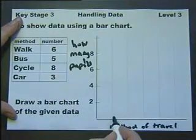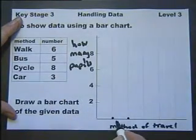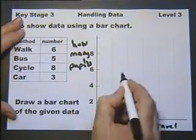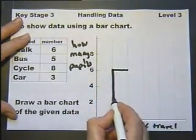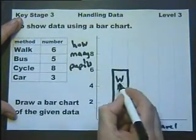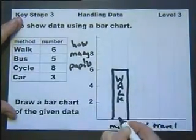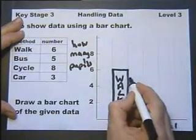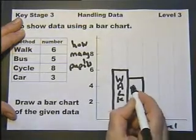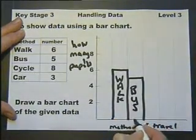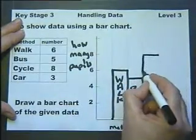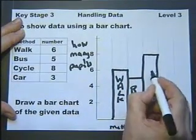Then we'll start with the bars. As long as the bars are all the same width, we label this one 'walk' and it goes up to six — with a ruler. Five people go by bus, that's halfway between four and six, so label that. Eight go by cycle, so that's there — I should be using a ruler, and I would in an exam.